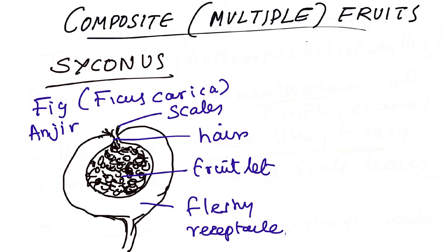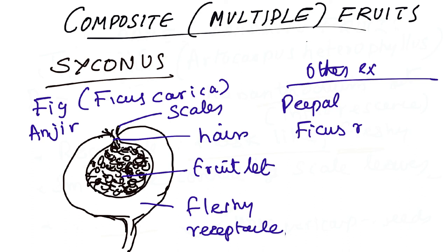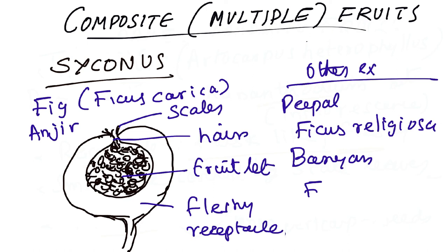Two other important examples of syconus are the peepal tree (Ficus religiosa) and the banyan tree (Ficus bengalensis). These are also syconus-type fruits.